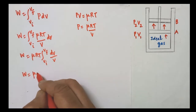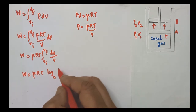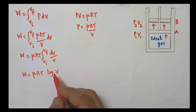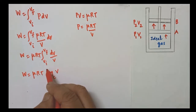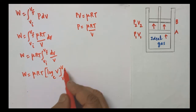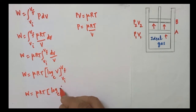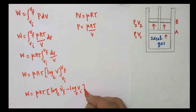Applying this formula, W = μRT times [log base e of V] evaluated from VI to VF. Substituting the limits, W = μRT times (log base e of VF minus log base e of VI). Using the logarithmic property that log M minus log N equals log(M/N), we can simplify this expression.